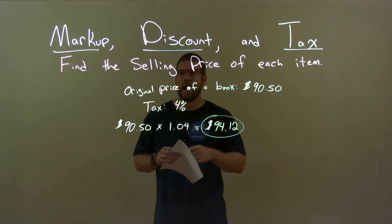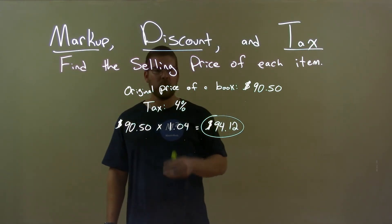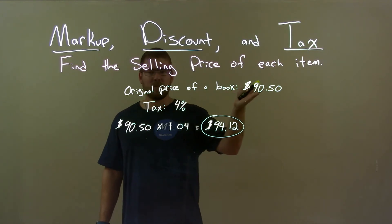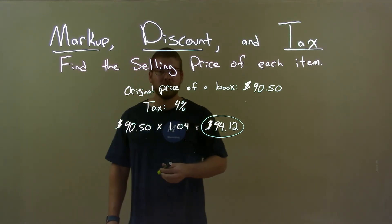So, quick recap, we're given the original price of a book is $90.50 and our tax is 4%, okay? Well, to make this calculation, we take the original price, multiply that by 1.04 and get our final answer, $94.12.